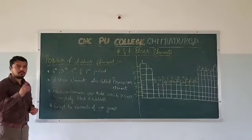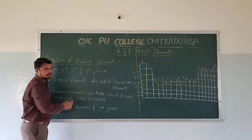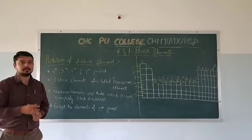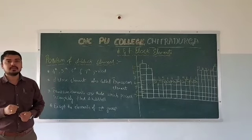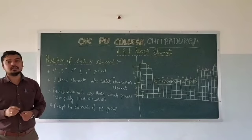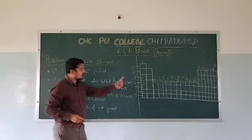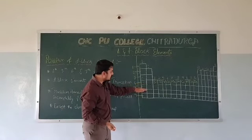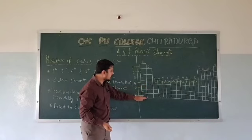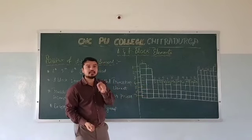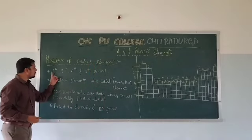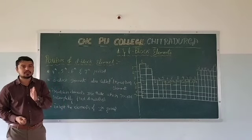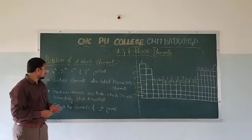In this video, let us discuss about the position of D-block elements — where exactly they are present in our periodic table. The 4th, 5th, 6th, and 7th periods contain D-block elements.